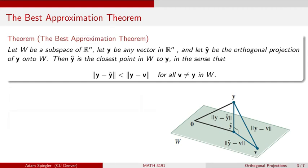Welcome everybody. In this video, we are going to discuss what is called the best approximation theorem. The best approximation theorem gives us one reason why orthogonal projections into subspaces are particularly nice, because they give us the best approximation for a vector which sits outside of that subspace.